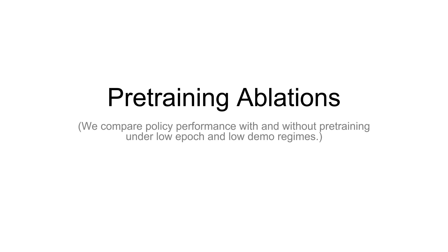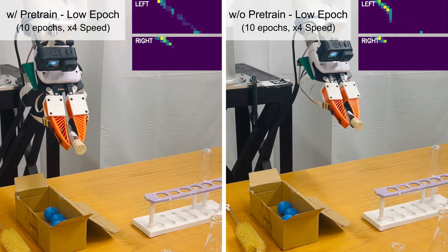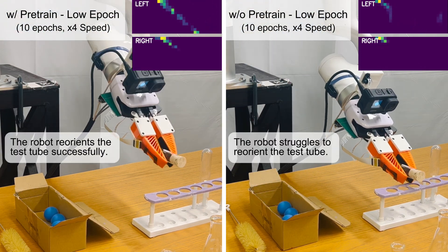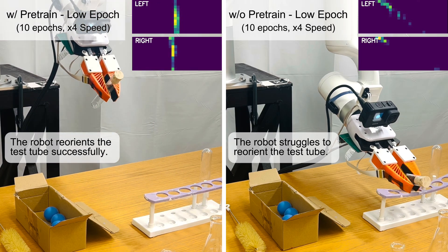We also compare our policy with pre-training to a baseline with no visual tactile pre-training, whose vision encoder is initialized from CLIP. In the low epoch regime, with just 10 training epochs, the policy with pre-training learns faster and can successfully reorient the test tube, while the policy without pre-training fails to do so.